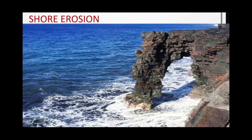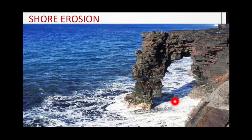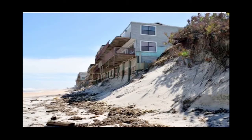Now we will learn how soil is eroded by ocean waves or sea water. Ocean waves are very powerful — when they strike the rocks on the shore, soft rocks are eroded. You can see in the picture that the hard rock is still standing and getting eroded slowly, while the soft rock all around has already been eroded.